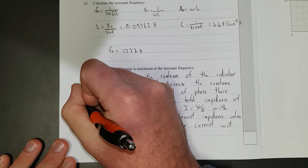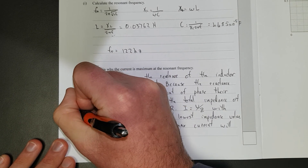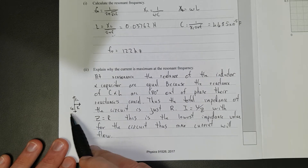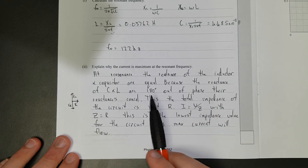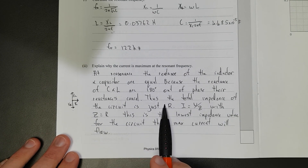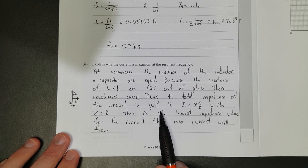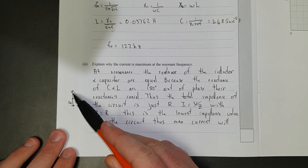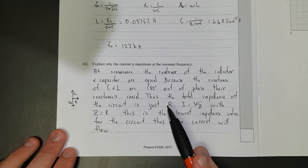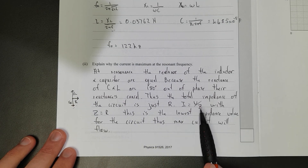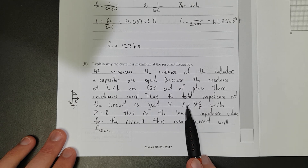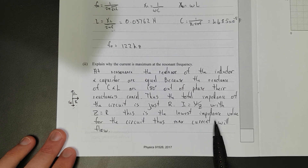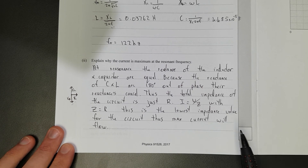Because XL and XC are 180 degrees out of phase, their reactances cancel. Thus the total impedance of the circuit is just R. When the circuit is at resonance, the reactance of the capacitor equals the reactance of the inductor, and the total impedance is just the resistance. Using the fancy version of Ohm's Law, I equals V over R - with impedance equal only to resistance, this is the lowest possible impedance for the circuit, thus maximum current will flow.